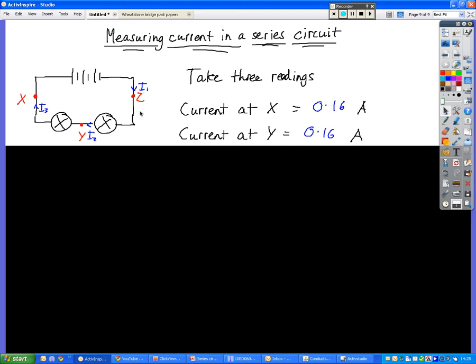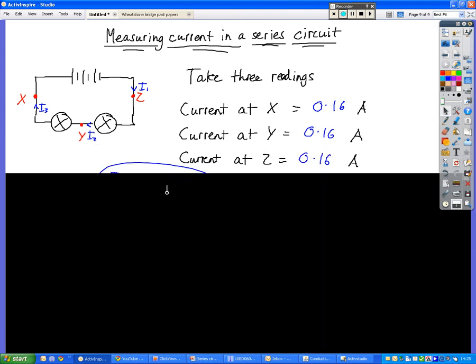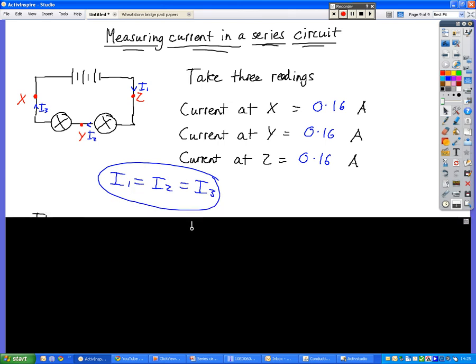We've got a current I1 here, I2 here, and I3 here - three different points we took the current at. We found that the current was the same at all points, roughly 0.16 amperes. Again, that depended upon how much the batteries had been used.